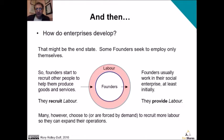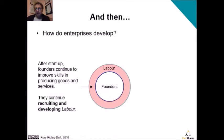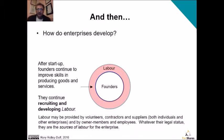So founders start to recruit other people to help them produce goods and services. They're not just providing labour, they're also recruiting labour. After the start-up phase, they'll continue to invest in improving skills and producing goods and services. The recruitment of labour might take many forms: volunteers, contractors, or other individuals and companies acting as suppliers. But labour might be the owner-members — the founders — or it might be people recruited under employment contracts. Whatever their status, they are all sources of labour, and the Fair Shares model encourages you to treat them as labour members or labour shareholders.